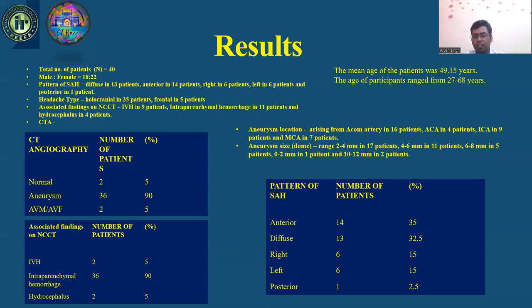The mean age of the patients was 49.15 years, with an age range of 27 to 68 years. Aneurysm location: arising from the ACOM artery in 16 patients, intracranial artery in 4 patients, internal carotid artery in 9 patients, and middle cerebral artery in 7 patients.